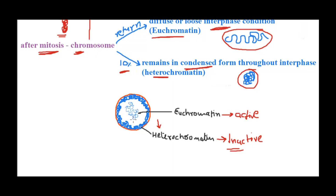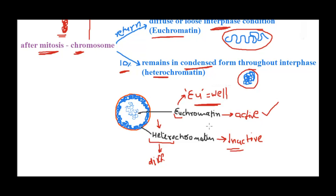We discussed this in the X chromosome inactivation video — the bar body is always near the nuclear envelope because the periphery is transcriptionally inactive, whereas transcription activity is high in the center. Now let's look at the terms more closely. The meaning of 'eu' in Greek is 'well,' and 'hetero' means different. Euchromatin is the transcriptionally active chromatin available for transcription and gene expression, so all genes that need to be expressed are present in the euchromatin region.